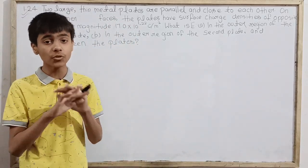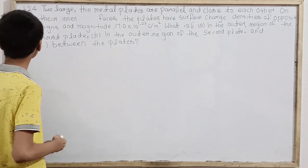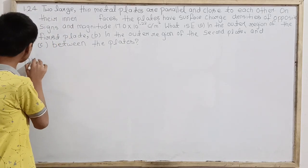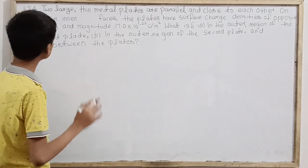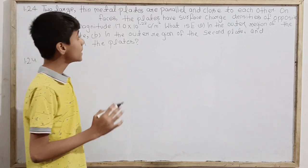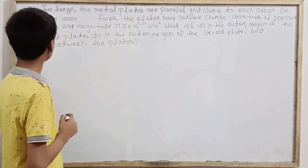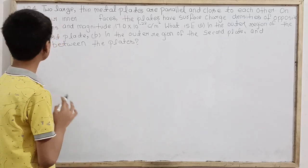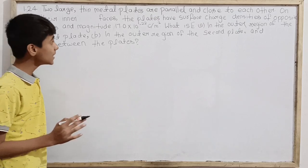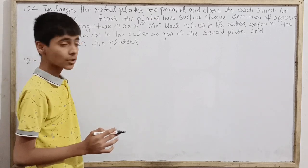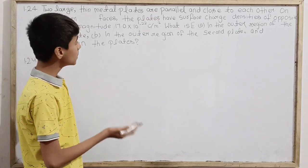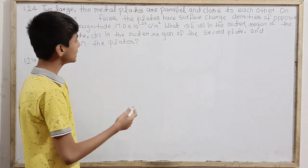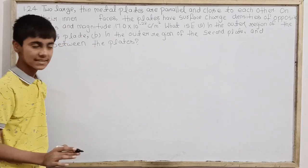The theory and concepts we have entirely cleared and now we are going to focus on our numericals. This is problem 1.24, which states: two large thin metal plates are parallel and close to each other. On their inner faces, the plates have surface charge densities of opposite signs and magnitude 17.0 into 10^-22 coulomb per meter square. What is E in (A) the outer region of the first plate, (B) the outer region of the second plate, and (C) between the plates?